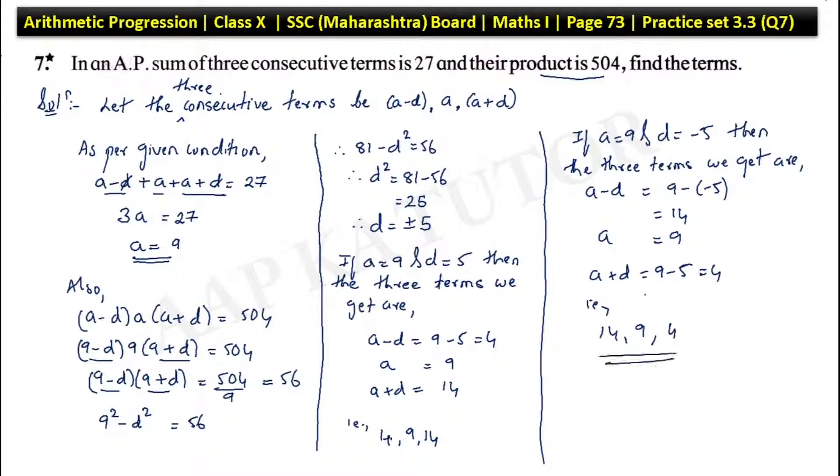So either 4, 9, 14 are the terms or 14, 9, 4. Basically, these are the same numbers. So you have two sets of three consecutive terms: 4, 9, 14 or 14, 9, 4. So I hope what I explained you understood. In this way we will solve other questions. Stay with me. Share my video with your friends and please subscribe to the channel. Thanks a lot for watching, do take care yourself, bye bye.